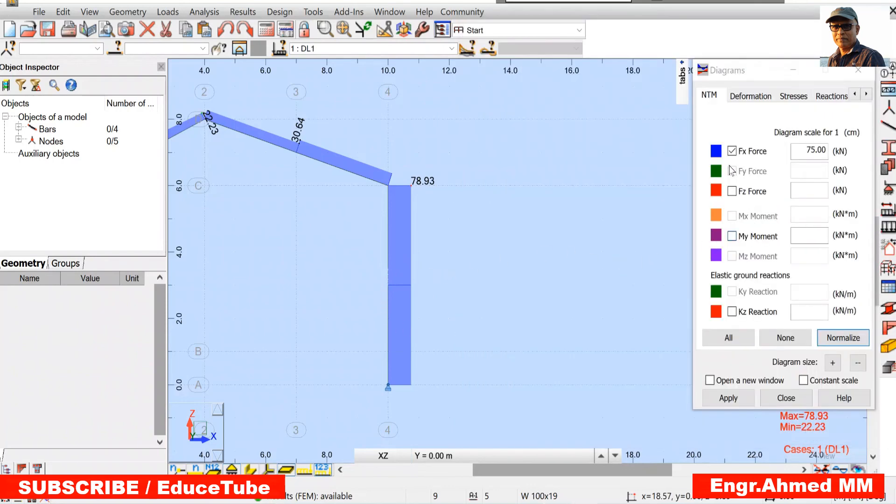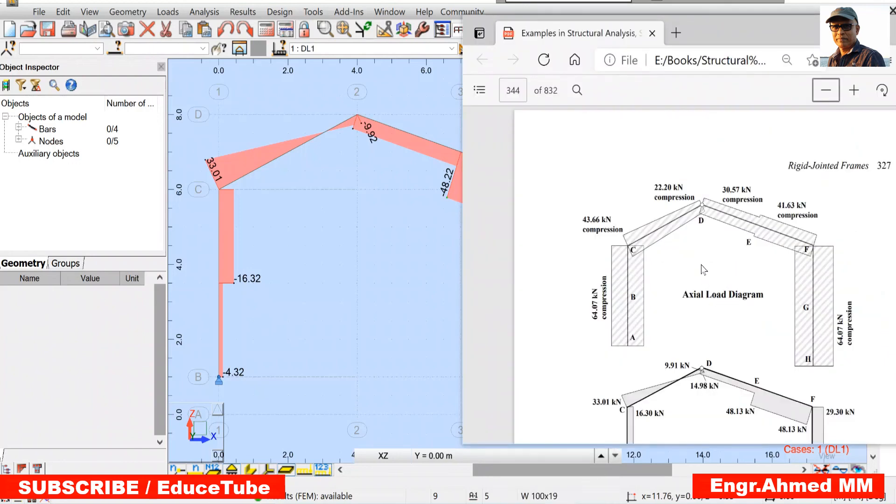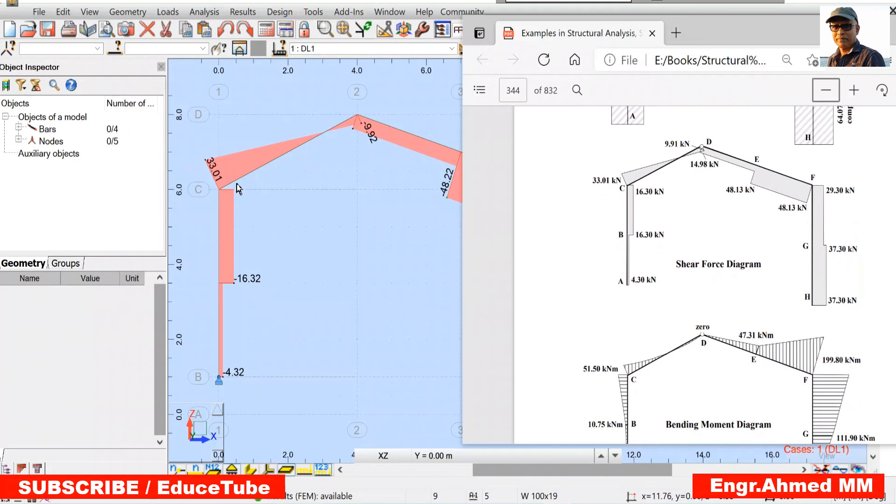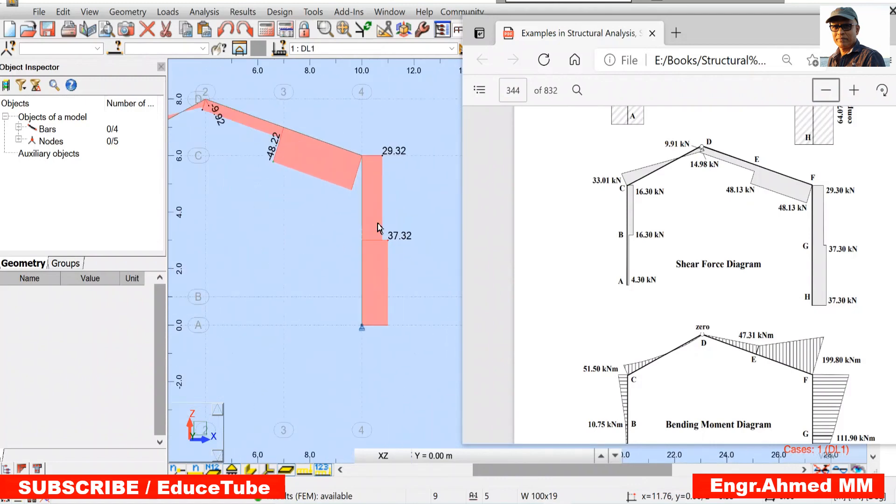So axial force already we checked, and it is perfect. So let's go for removing axial. We will go for the shear force. Check the shear force diagram and compare it with the value what it is here. Look at 33, here 33. 16, 16. Here 9.92, here 9.91. Here 48.13, here 48.22. So very, very close. As well here, 29.3, 29.3. Here 37.3, here 37.32. So we are done with this.